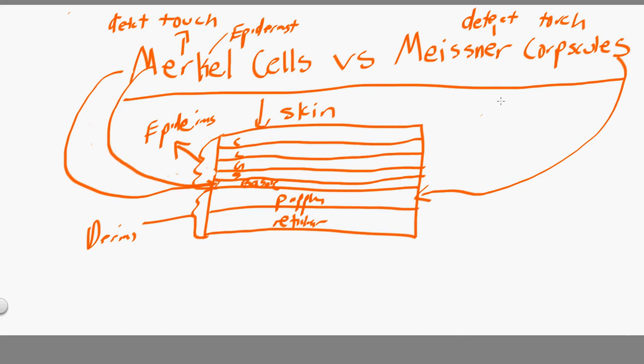The Meissner corpuscles also detect touch, but where are they? In the dermis, in the papillary layer of the dermis. This is where the Meissner corpuscles are. Both of these are detecting touch.